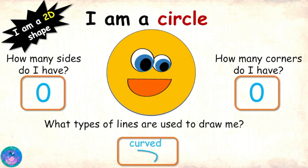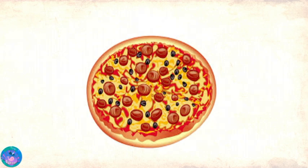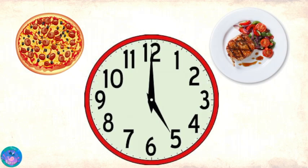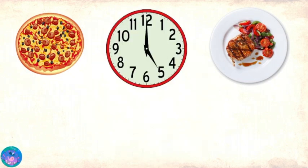Can you identify some objects that have my shape? Pizza! A plate! The clock in my living room! All these objects are circular! Awesome! Now you can meet the next shape!